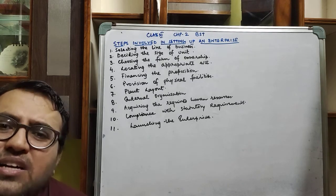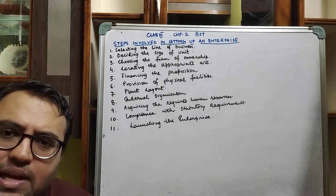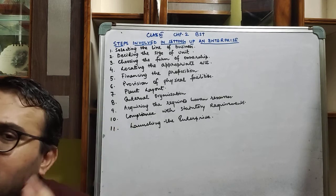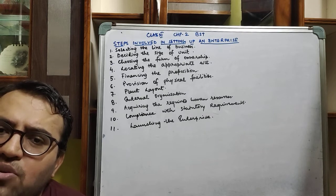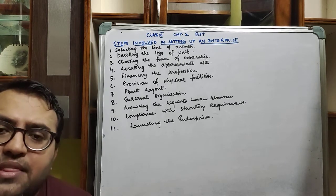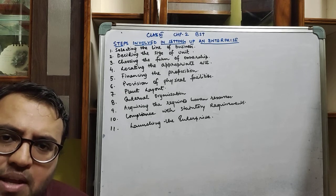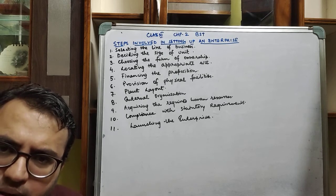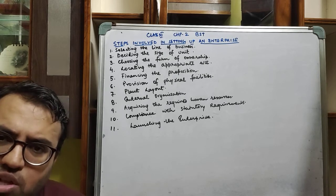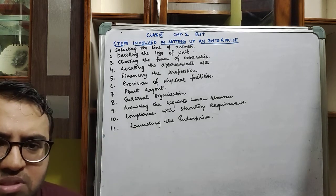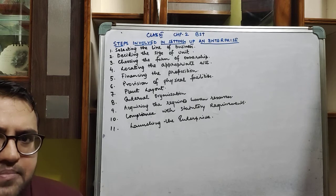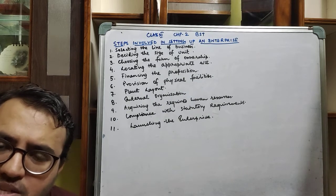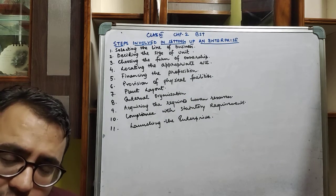Moving on to the third point — choosing the form of ownership of the enterprise. There are three broad categories: sole trader or sole proprietor, partnership, and joint stock company. The person has to decide which form of ownership is suitable when launching the enterprise.